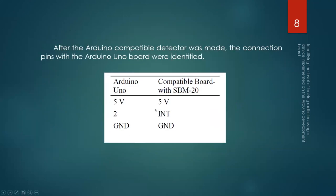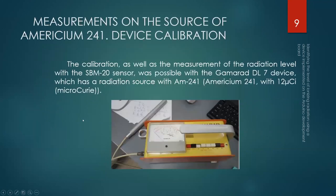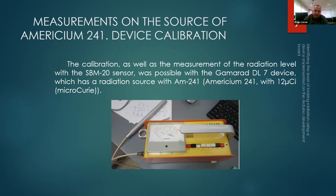After constructing this simple and inexpensive device, the most important step was calibration. They calibrated the device using a source of americium, a radioactive element. For this calibration step, they used a reference dosimeter, which is presented here.